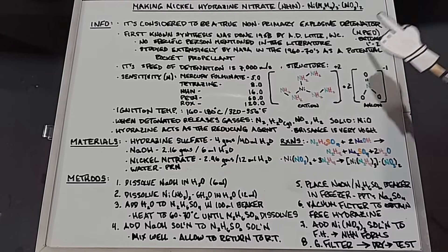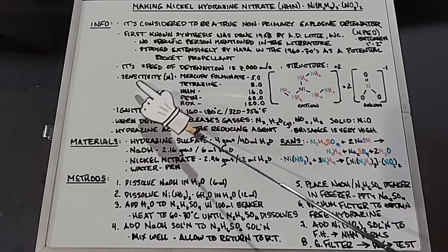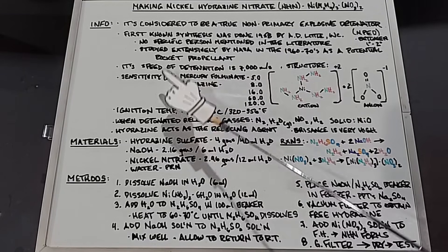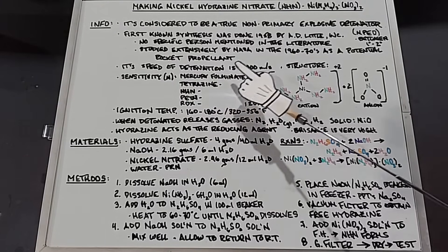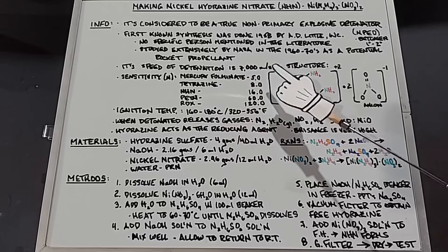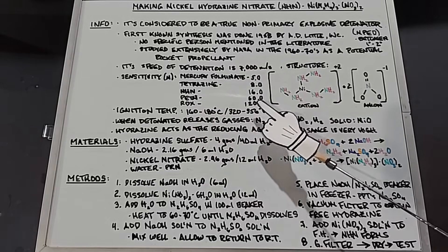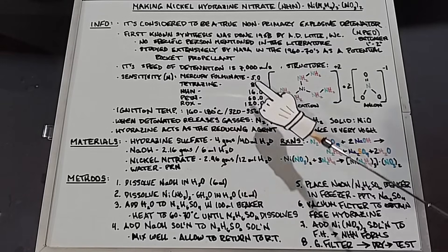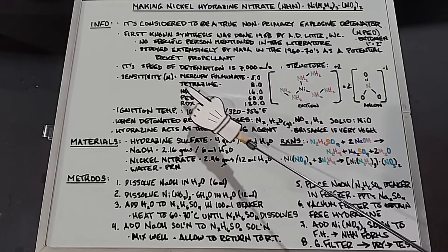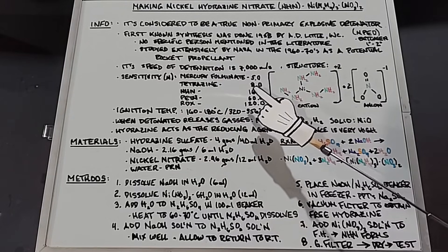I mentioned that it falls between a primary and a secondary explosive, so I want to show you some of the sensitivities here of different explosives. That N stands for newtons and it's the amount of pressure needed to make them explode. We have mercury fulminate, which is a primary, at five newtons. Tetrazene, also a primary, at eight newtons. Then you get to PETN with 60 newtons and RDX at 120. NHN falls in between all of these at 16. So you have two primaries, two secondaries, and it's right in the middle at 16.